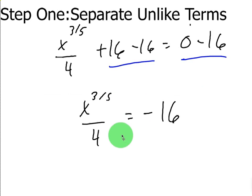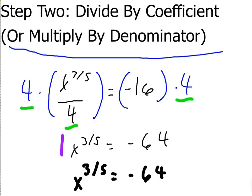What's the next thing you're going to do? Multiply by 4. Yep. You'll multiply both sides by 4. And that will cross-cancel these 4s right here. So, you get negative 64 on the right. And you get x to the three-fifths on the left.